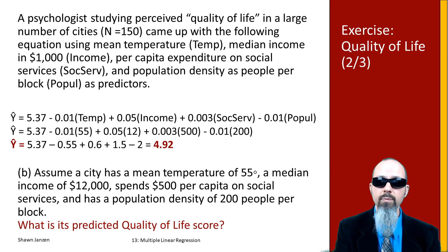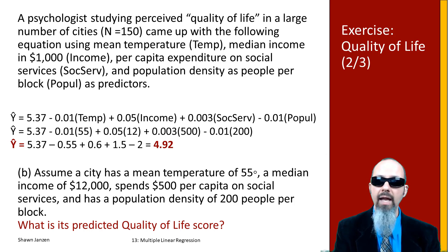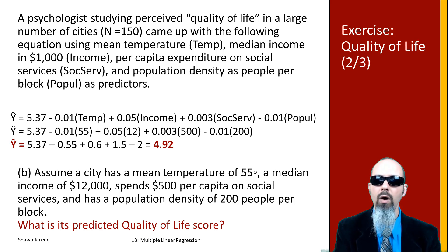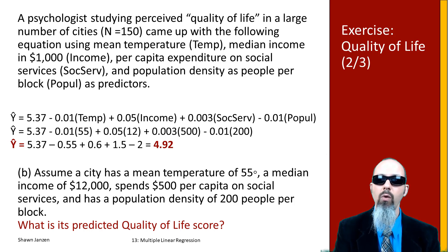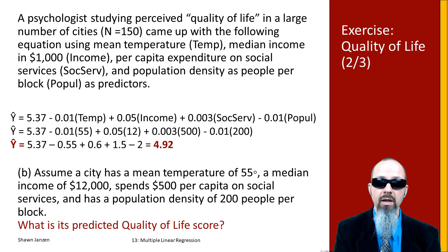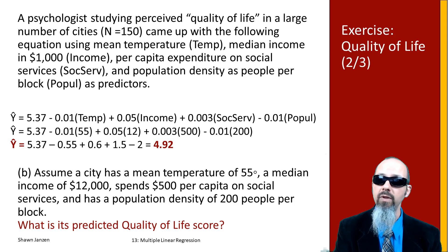Contrast this with simple linear regression, where we would only have one independent variable — any one of these four — and would just plug in that single value to get a predicted score. Here we have four variables that can take on different values for each city, and we're using all of them to generate a more precise predicted estimate.